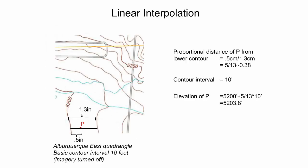Using the Albuquerque US Topo quadrangle, an exercise similar to the previous example can be undertaken. The proportional distance of P to the lowest elevation is a unitless fraction since the inches units in the numerator and denominator cancel out. This proportional distance of 5 thirteenths is about 0.38. This value is multiplied by the contour interval of 10 feet, which gives 3.8 feet. This is added to the 5,200 feet of the lower contour line, giving an elevation of 5,203.8 feet for point P.